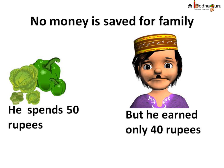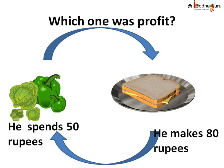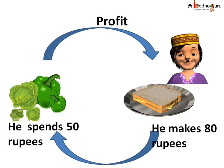He doesn't want that. Now, can you tell how Rahim can become richer or take back more money to his home? Is it by making 40 rupees after spending 50 rupees, or by making 80 rupees after spending 50 rupees? He has an extra 30 rupees for his home. So we can say Rahim is making profit here.